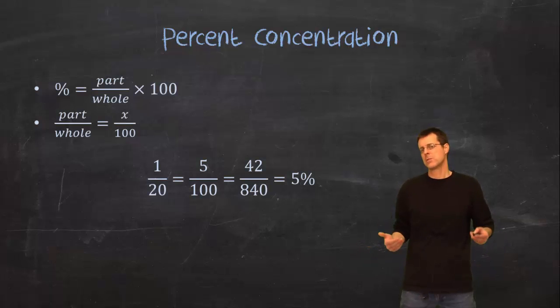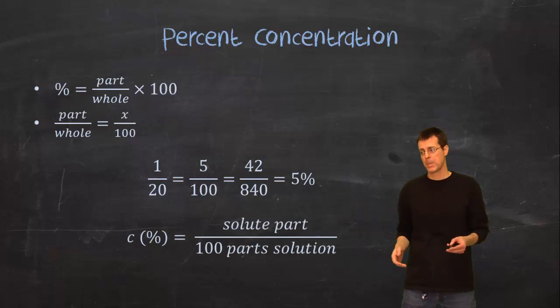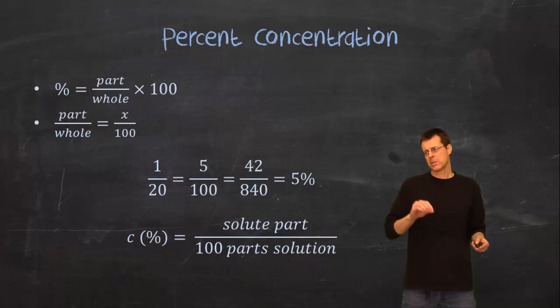So if those all represented solutions and we had one solute in 20 milliliters say for example of solution or if we had five parts of solute in a hundred parts of solution and so on. So when we're talking about percent concentration it's going to be the solute part divided by a hundred parts of solution.